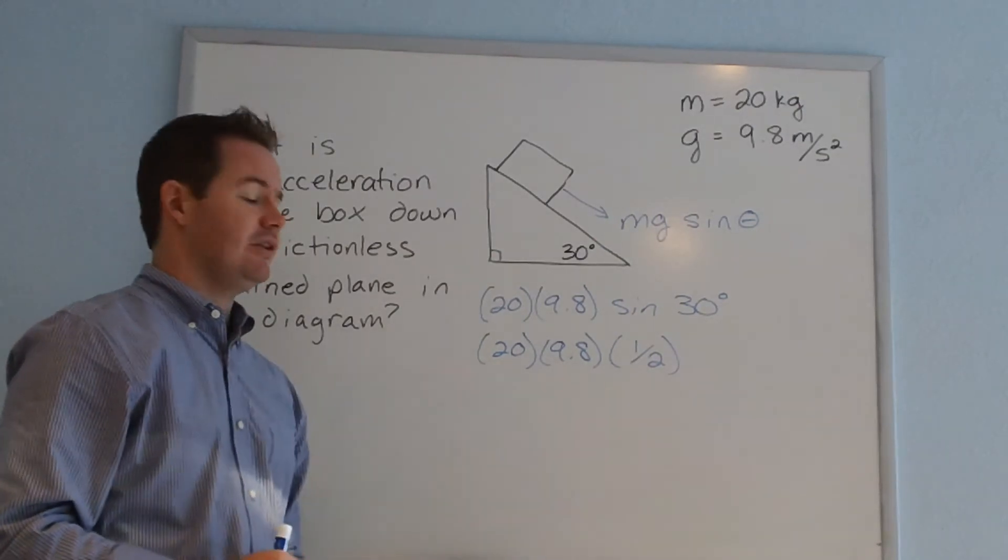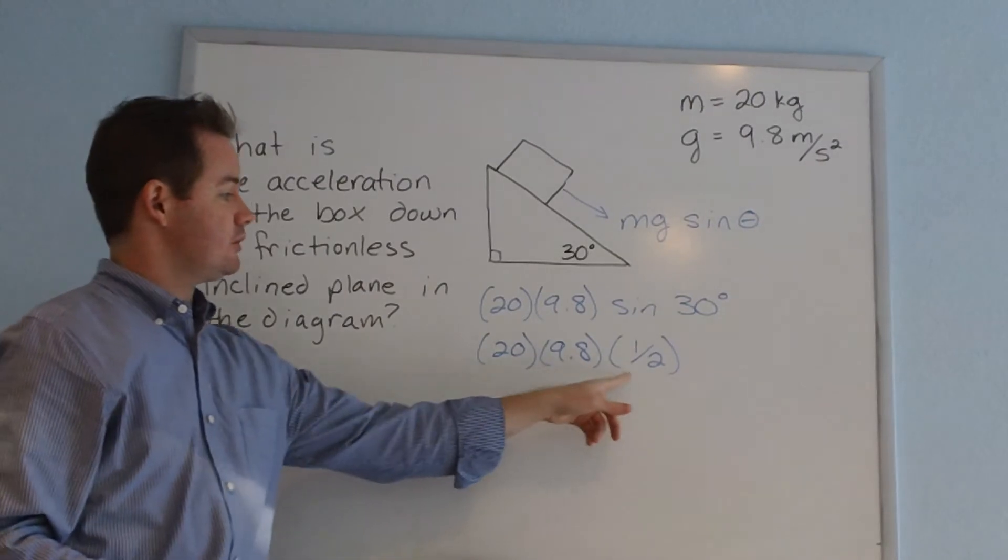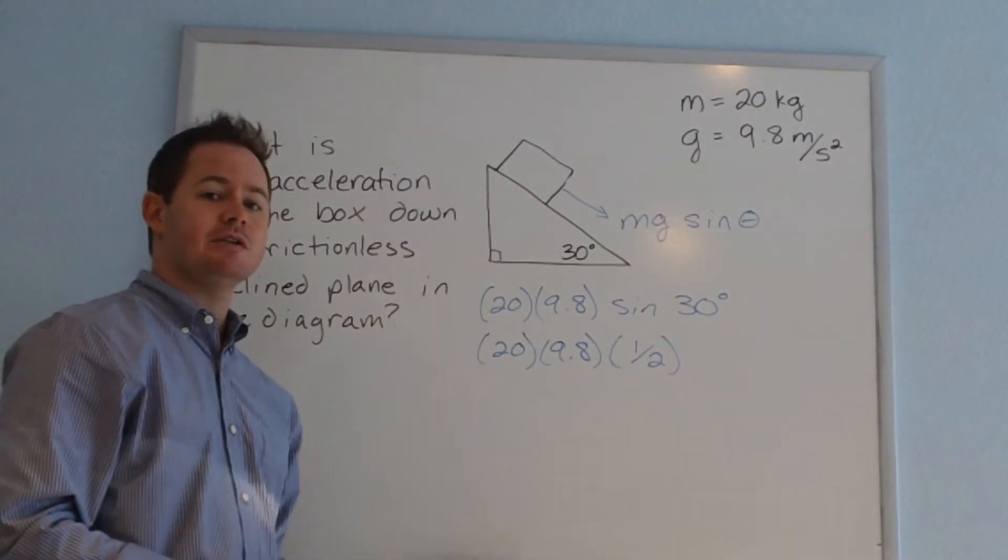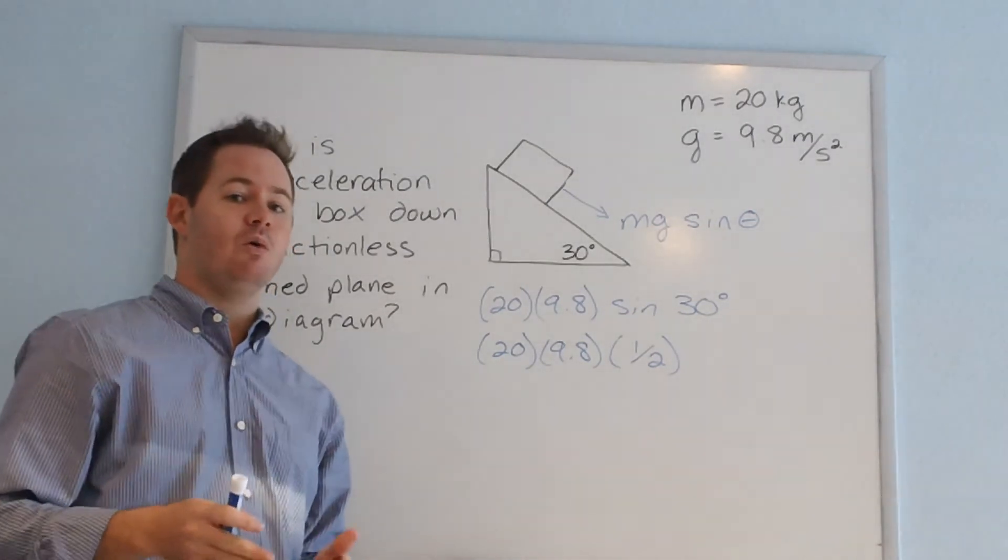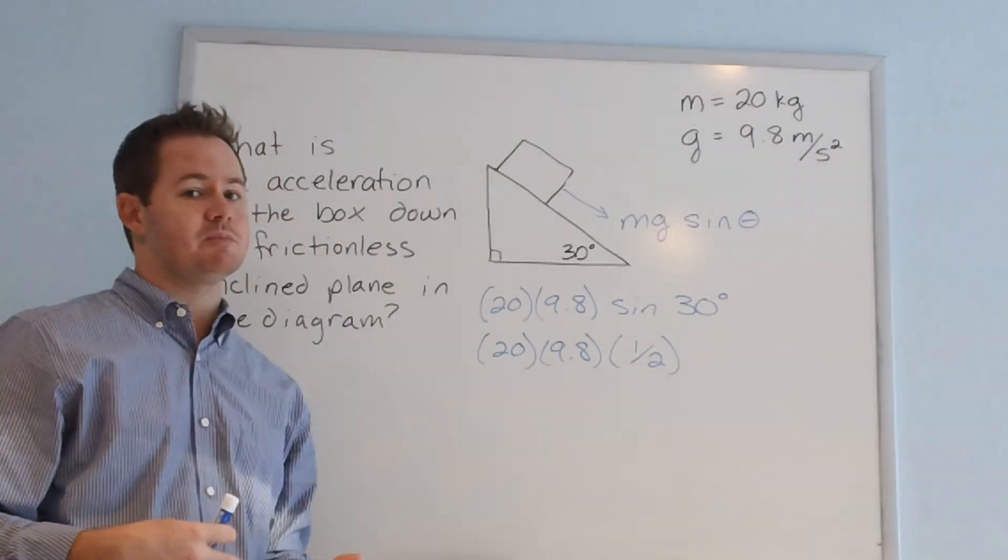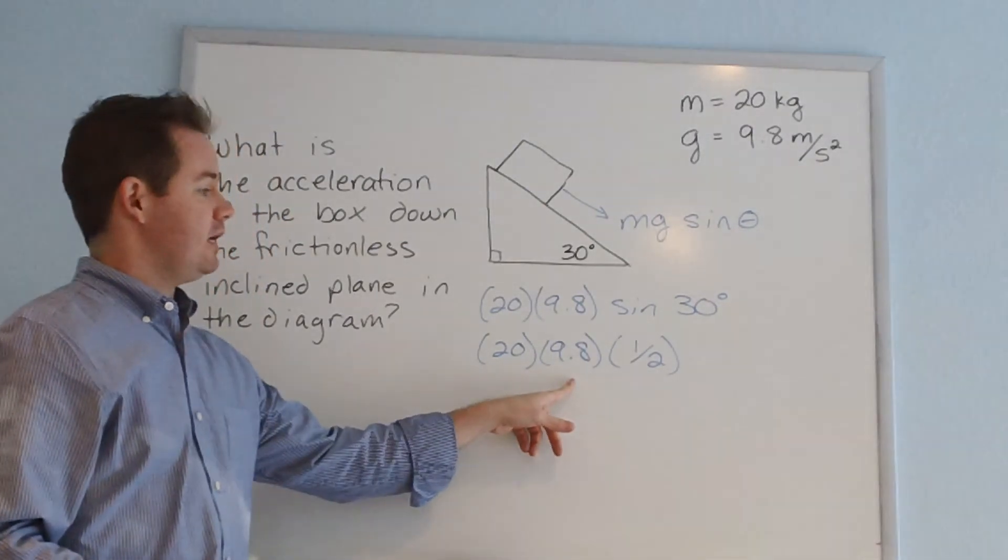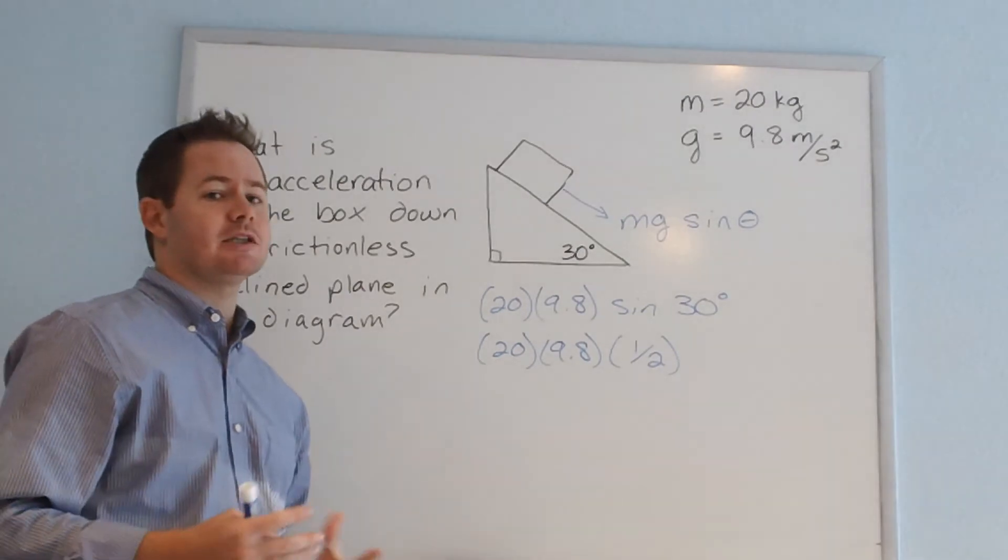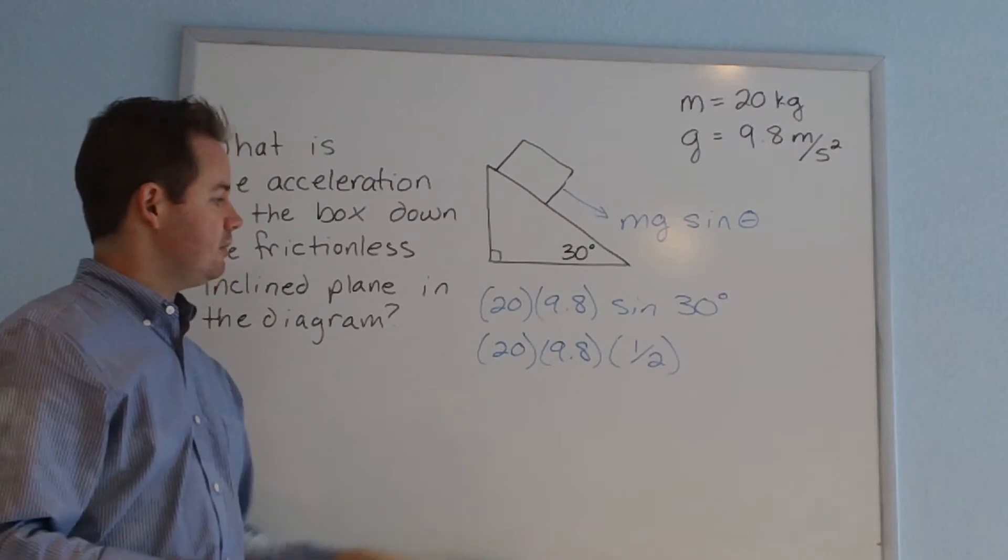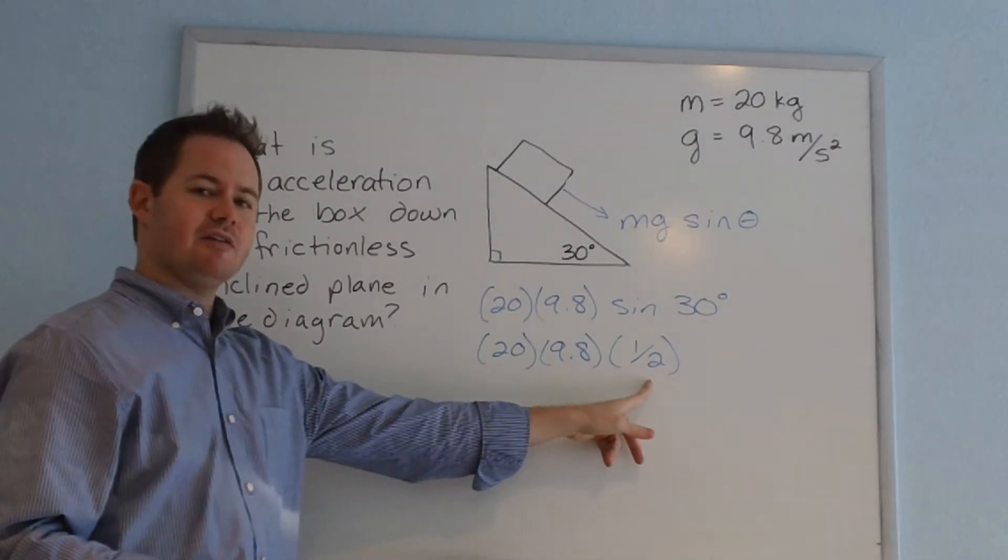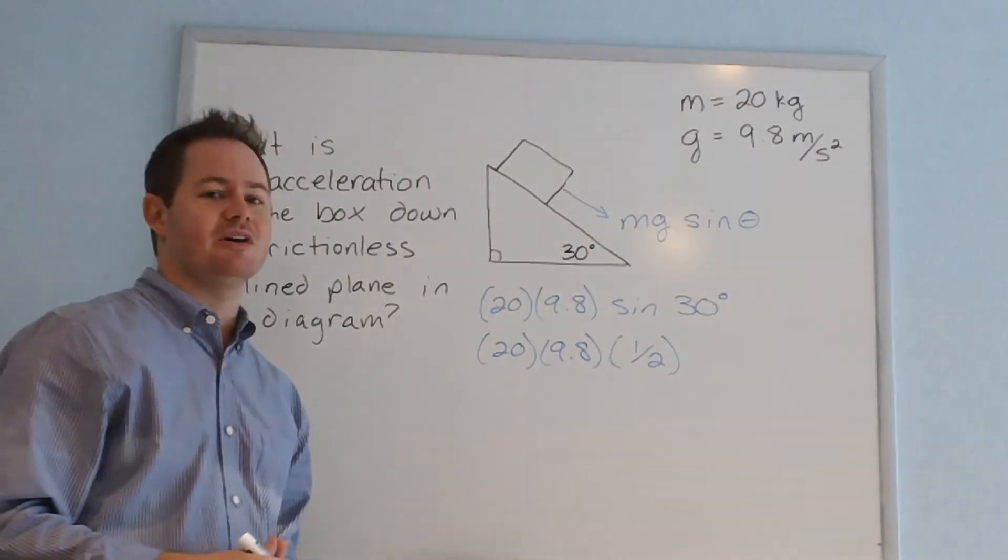Now, in terms of doing the math on this, one math tip: when you're multiplying numbers, it doesn't matter the order, so you want to pick an order where the math is as easy as possible. 20 times 9.8 is going to be a complex calculation, difficult to do in our head. But if we change up the order a little bit, 20 times one-half is much easier. What is half of 20? If you said 10, you are correct.